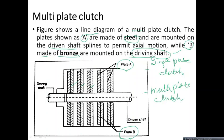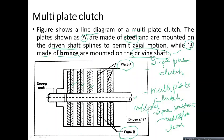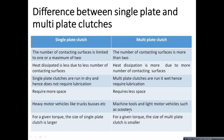Comparing single plate clutch and multi-plate clutch: if there is a space constraint, you go for a multi-plate clutch; if there is no space constraint, you go for a single plate clutch. One more reason — if you need smoother operation of the clutch, then you go for a multi-plate clutch.